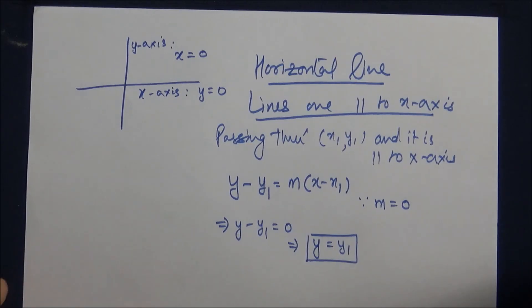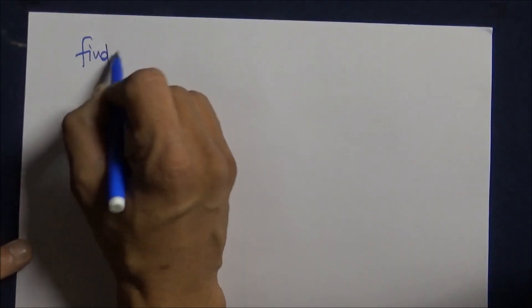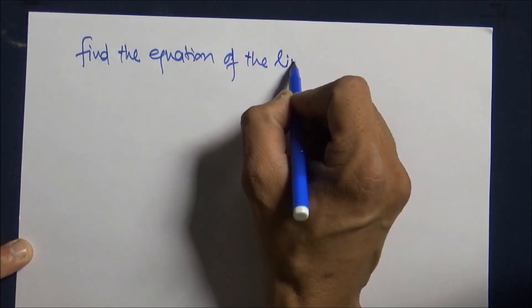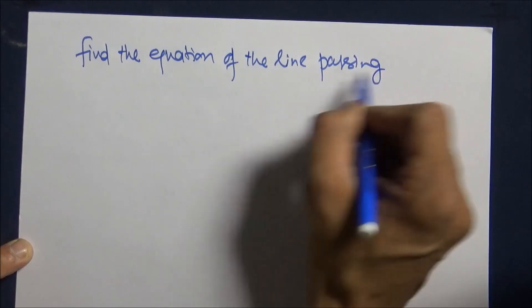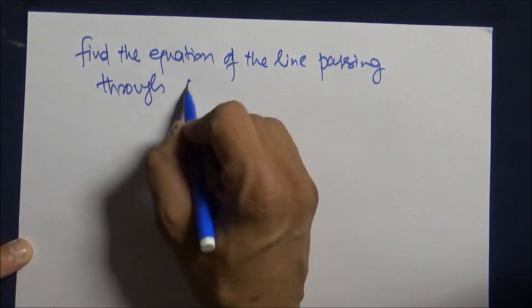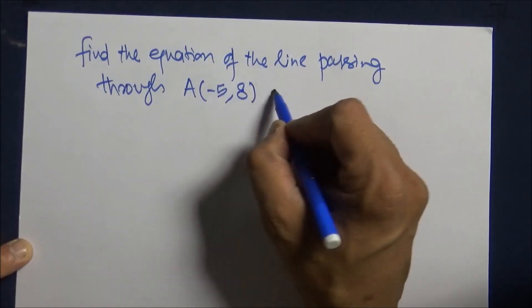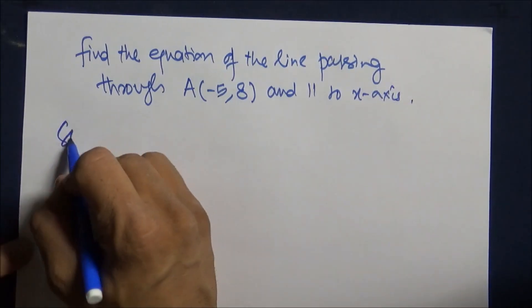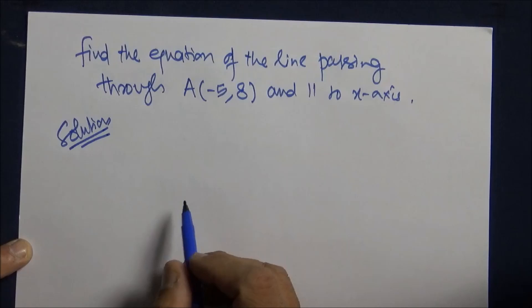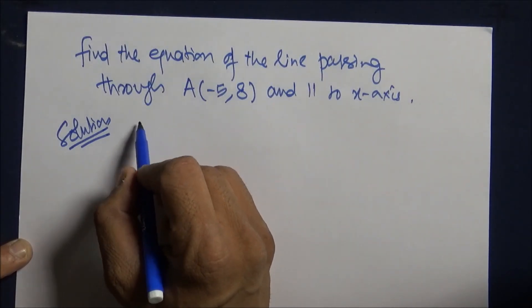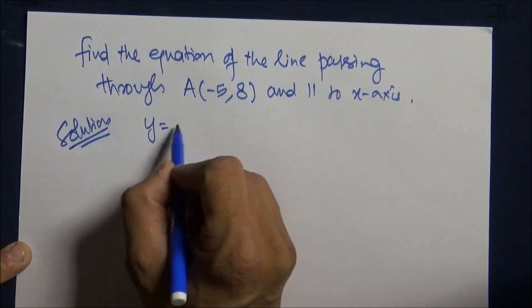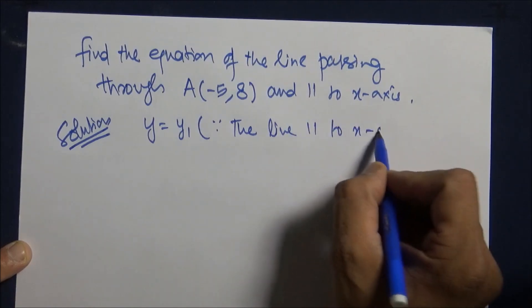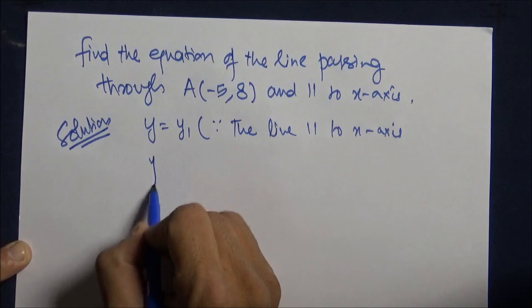If they give you a question, find the equation of the line passing through (-5, 8) and parallel to x-axis, then straight away you write: because the line is parallel to the x-axis, therefore its equation is simply y equals y1, and hence its equation is simply y equals 8.